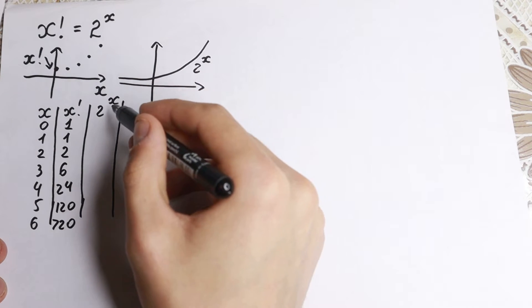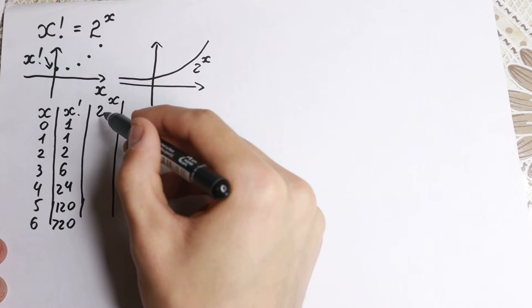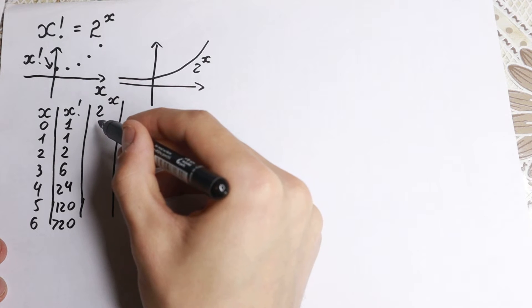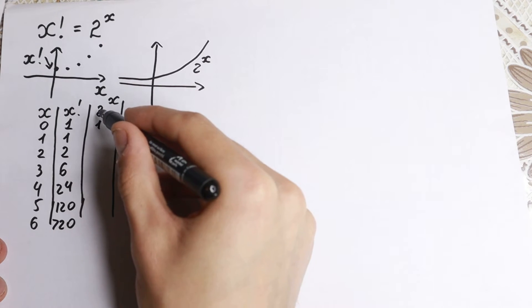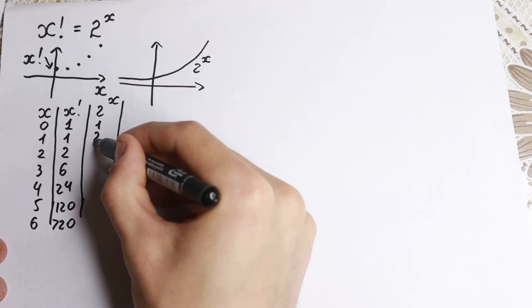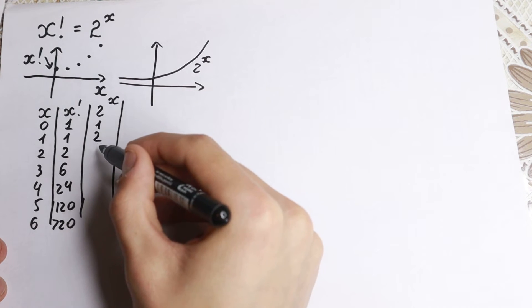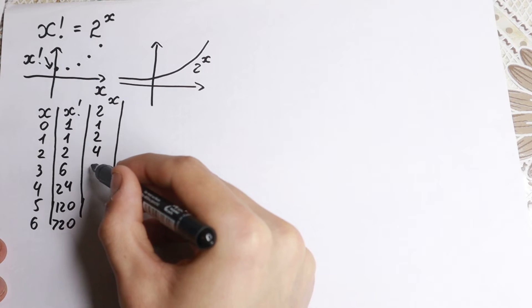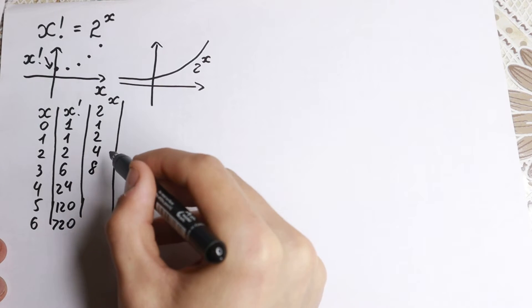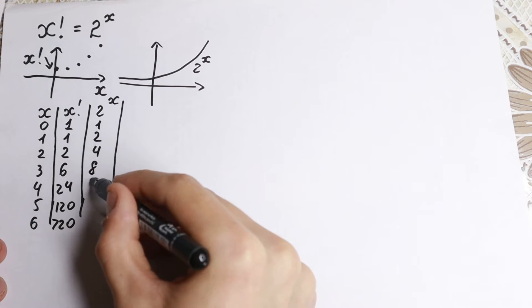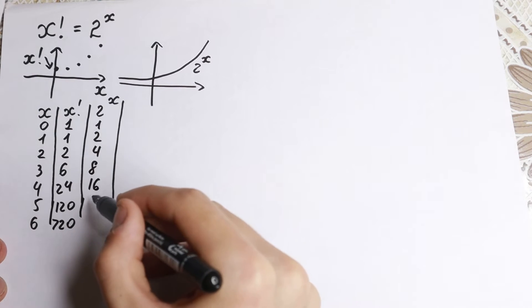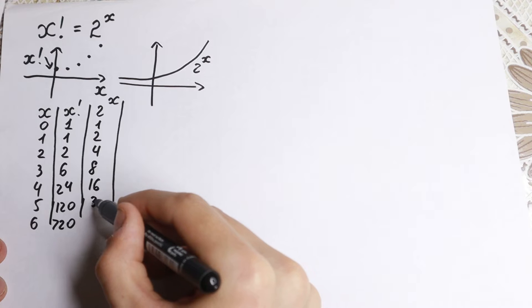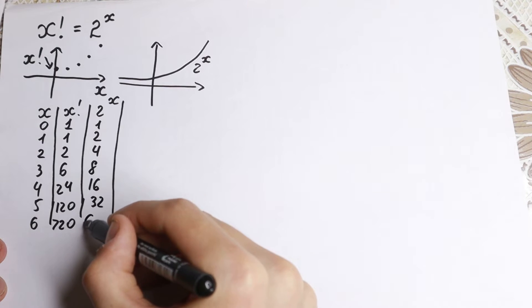Now 2 to the x: 2 to the 0 is 1, 2 to the first is 2, 2 squared is 4, 2 cubed is 8, 2 to the 4th is 16, 2 to the 5th is 32, and 2 to the 6th is 64.